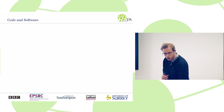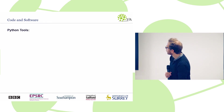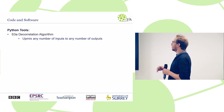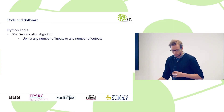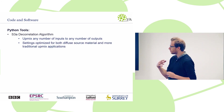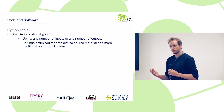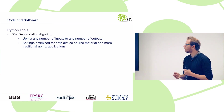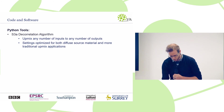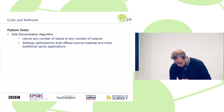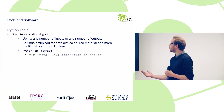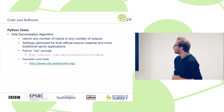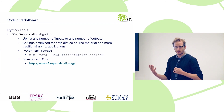We combined all of that data into Python tools — the S3A decorrelation algorithm — that allows us to upmix any number of inputs to any number of outputs. It includes settings for diffuse source materials like rain and applause, but also more traditional mix applications like going from stereo to five-channel. It's available as a Python package so you can download and have a listen yourself, and there will be examples and code on the S3A website.